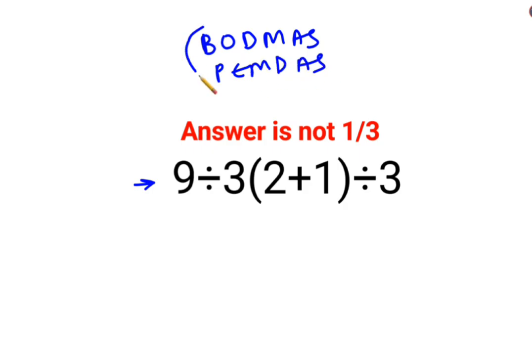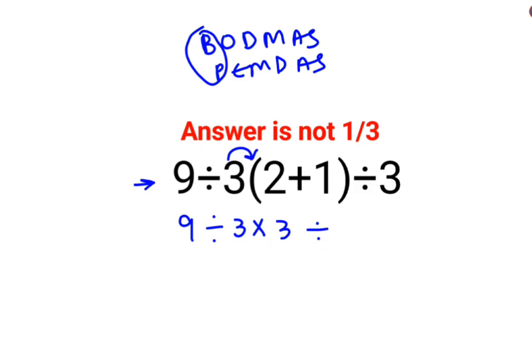In both cases, the first important thing we need to do is brackets, or parentheses. We'll keep the rest of the question as it is, and 2 plus 1 is 3. Since there is no sign between this 3 and the bracket, it means multiplication. Divided by 3.